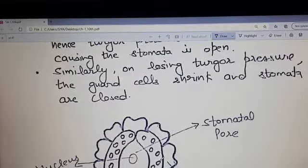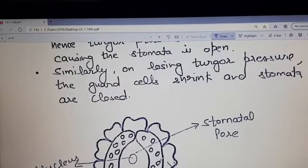Similarly, on losing the pressure, the guard cells shrink. The pressure is lost and the guard cells will shrink and the stomata will close.